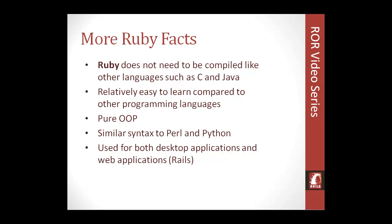Ruby is pure object-oriented. In Ruby, everything is an object — and I mean everything: numbers, booleans, are all treated as objects. But don't let that fool you — Ruby is a multi-paradigm language, so even though it's object-oriented, it also includes other types of paradigms like functional and imperative.